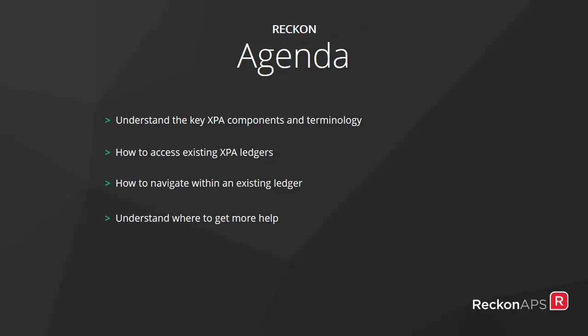This is the General Ledger and Asset Ledger for the REC and APS Module of Software. We will look at how to access existing XPA ledgers and how to navigate within the existing ledger and briefly look at the main components. Finally, we will make sure you understand where to get more help and more detail around the components and more in XPA.